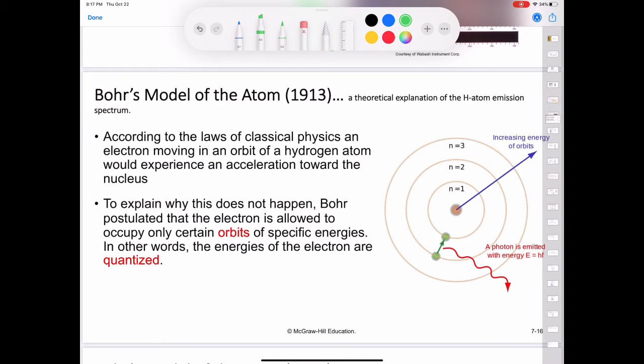Bohr's treatment is very complex and is no longer considered to be correct in all its details. Thus, we will concentrate only on his important assumptions and final results, which do account for the spectral lines. When Bohr first tackled the problem, physicists already knew that the atom contains electrons and protons.